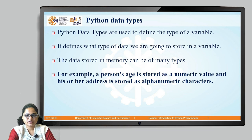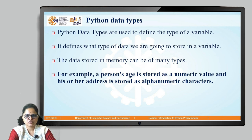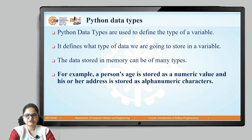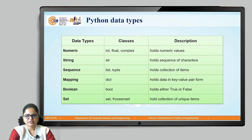The data stored in memory can be of many types. For example, a person's age is stored as a numeric value and their address is stored as alphanumeric characters. Depending on the attribute type, we can have different data types in Python. In most programming languages, different data types exist depending on the data.